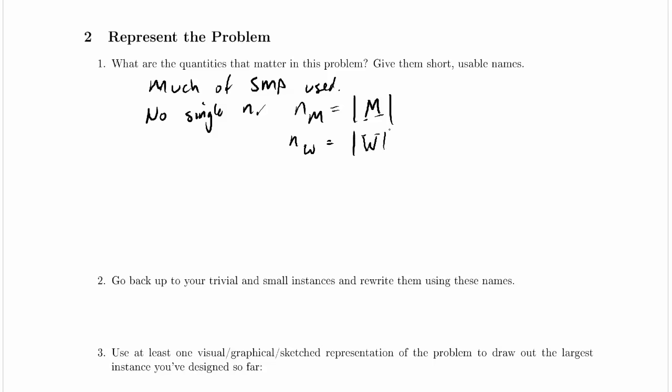I'm going to write it down here, but it maybe belongs later on, where we're describing the constraints on an instance, what makes a valid instance. But it's very relevant right away. We've said a couple of times that there are at least as many men as women, so we can say NM is greater than or equal to NW.